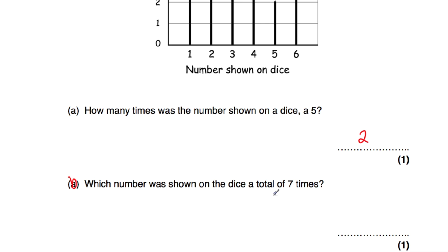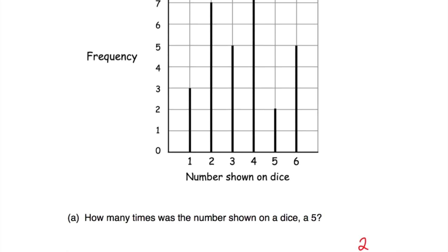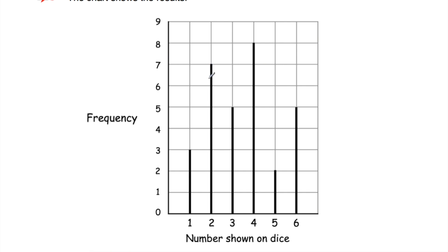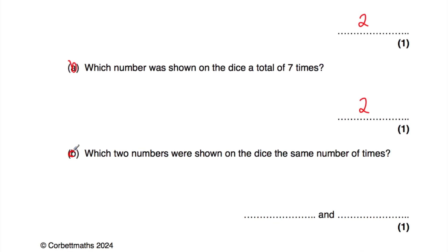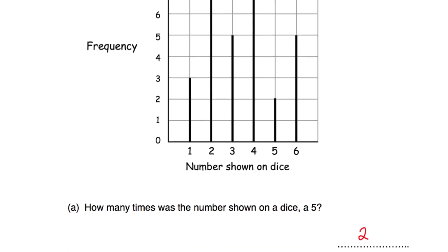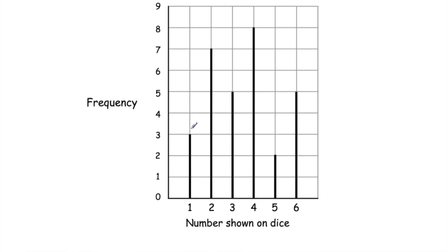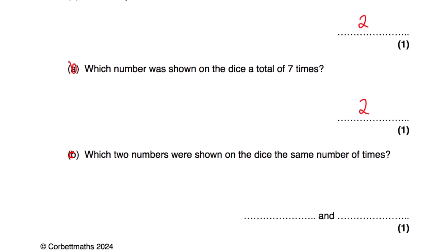Part B says which number was shown on the dice a total of seven times? Seven times — that's a frequency of seven. The number two appeared on the dice seven times, so the answer is number two. Part C says which two numbers were shown the same number of times? One appeared three times, two appeared seven times, three appeared five times — and so does six. Three and six both appear five times, so three and six are the two numbers.